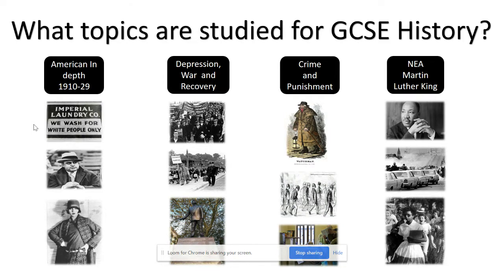We look at the changes that have happened, including those brought about by technology which has allowed for fingerprinting, a criminal database, and the use of DNA, which allows crimes to be solved that would not have been able to be solved 50 years ago. We also look at the changes in punishment, from the use of stocks and pillory to open prison and tagging today.